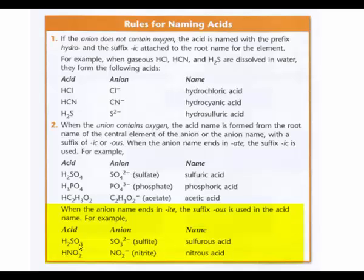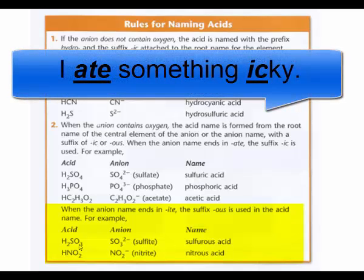So there's a way, there's a little mnemonic you can remember too. I ate something icky. I ate something icky. So I ate something icky. I like that. If the oxyanion ends in -ate, the acid ends in -ic. Phosphate, phosphoric. Acetate. I like that. That works pretty well.